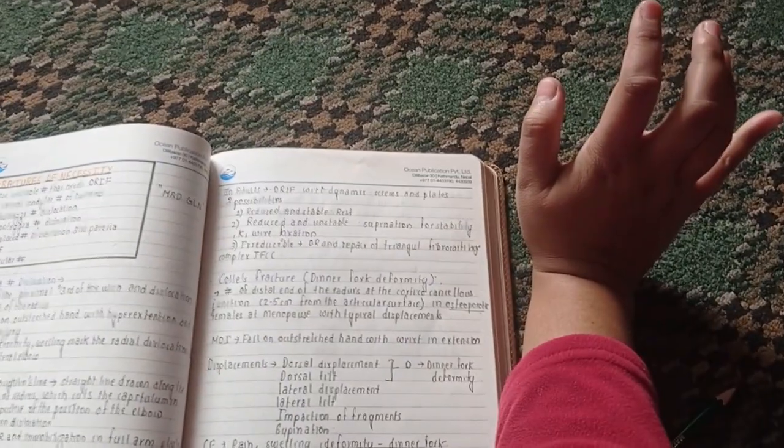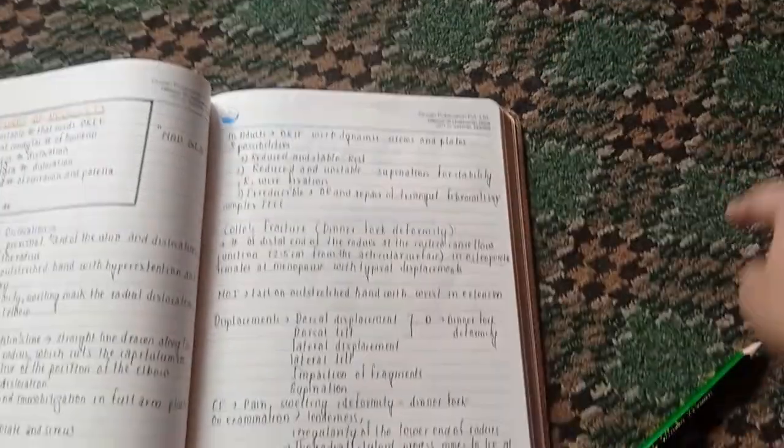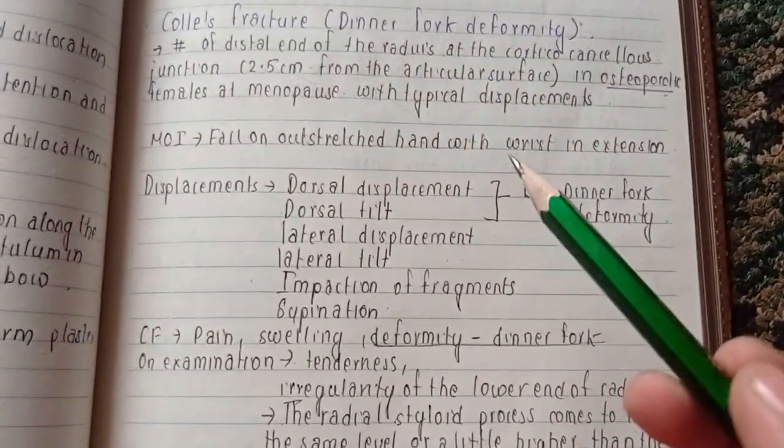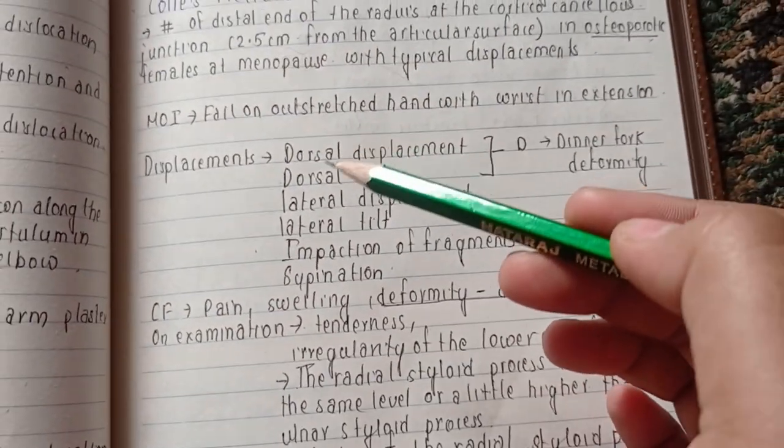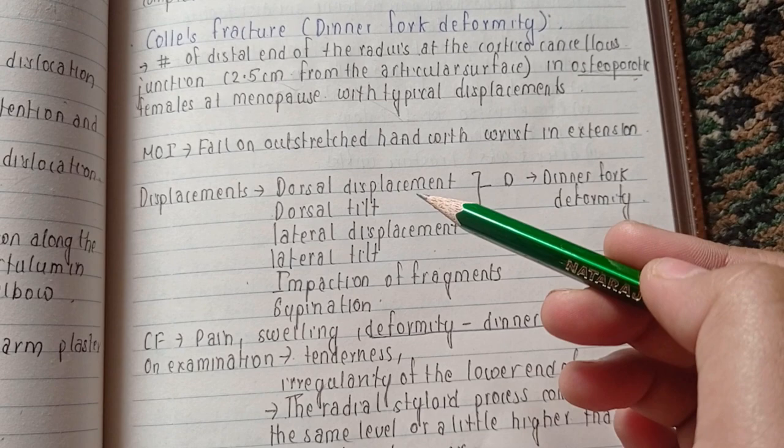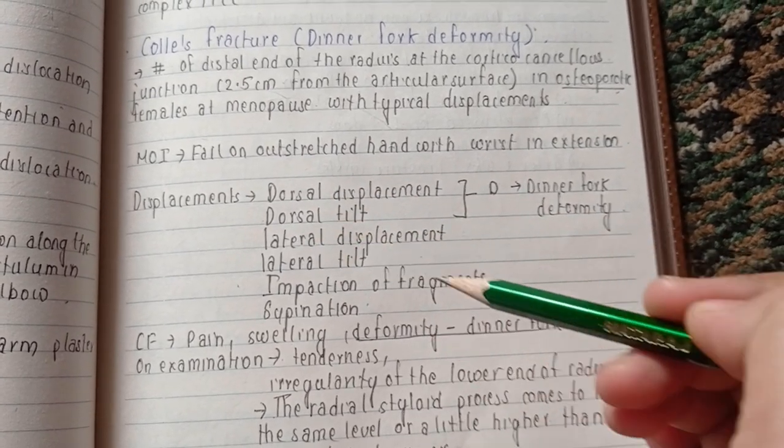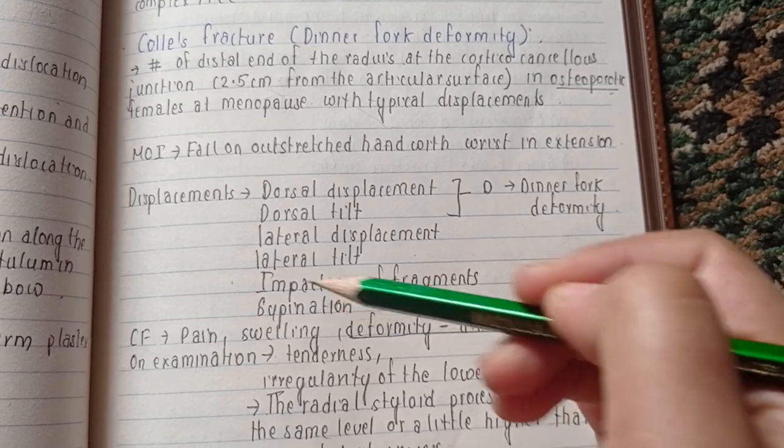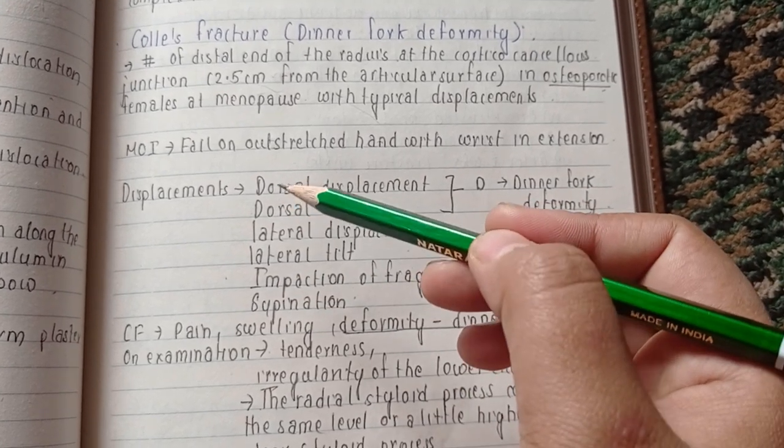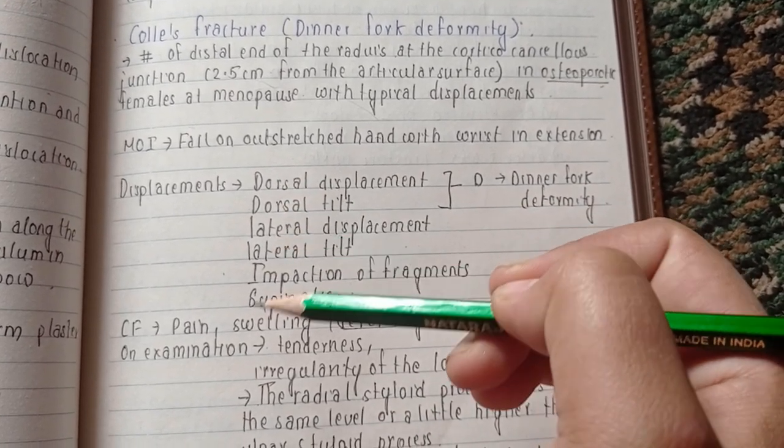The displacements which can occur are dorsal displacement, dorsal tilt, lateral displacement, lateral tilt, impaction of fragments, and supination. We can remember two D's and two L's and SI.